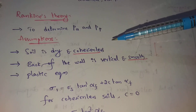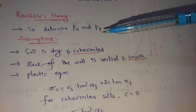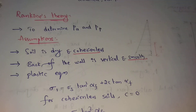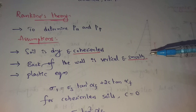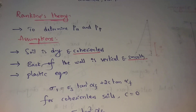First assumption: soil is dry and cohesionless. Second assumption: soil is homogenous and semi-infinite. Third assumption: the back of the wall is vertical and smooth. Fourth assumption: the ground surface is planar.